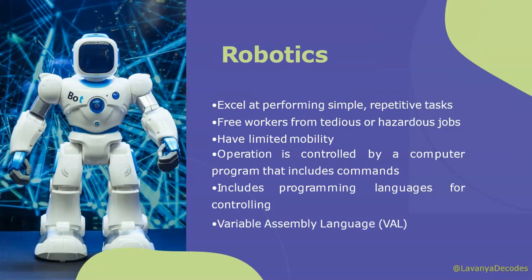Next is robotics, one of the major application areas. Basically, robots are used to perform simple and repetitive tasks. They could free workers from hazardous jobs. All operations are computer-programmed and controlled, including commands through programming languages. Artificial intelligence has a remarkable role in robotics. With the help of AI, we can create intelligent robots which can perform tasks based on their own experiences, beyond pre-programming. For example, humanoid robots. Recently, the intelligent humanoid robots named Erica and Sophia have been developed, which can talk and behave like humans.